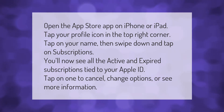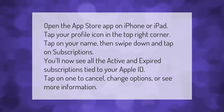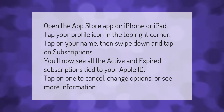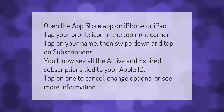Open the App Store app on iPhone or iPad and tap your profile icon in the top right corner. Tap on your name, then swipe down and tap on Subscriptions. You'll now see all the active and expired subscriptions tied to your Apple ID. Tap on one to cancel, change options, or see more information.